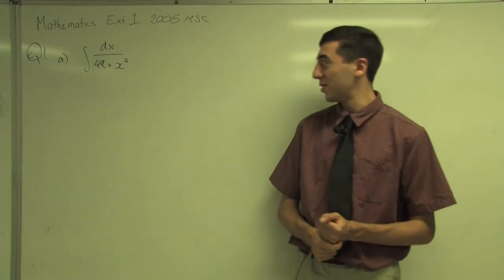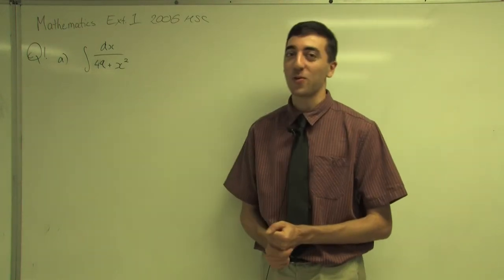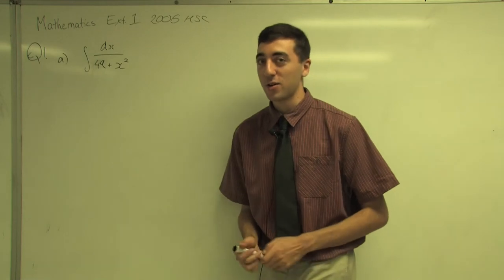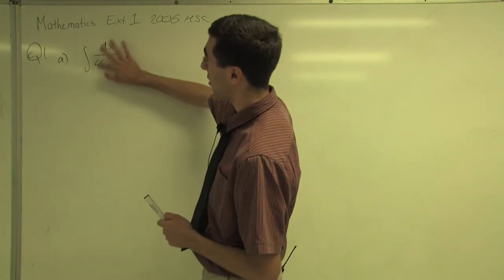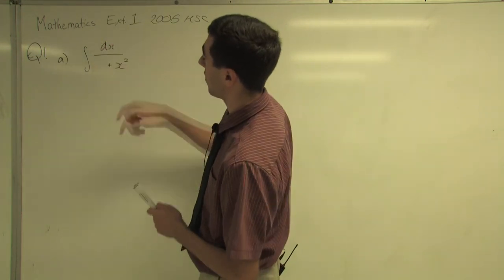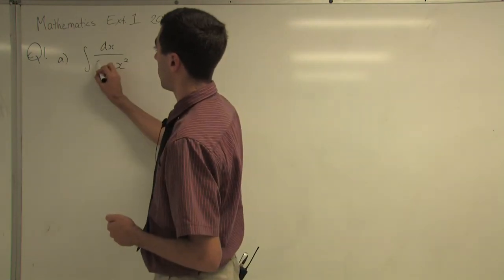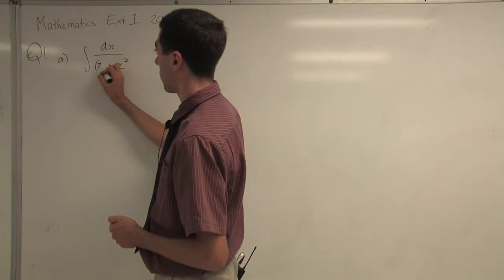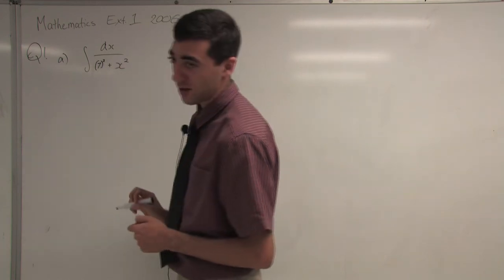The first question of the paper is find the integral of dx over 49 plus x squared. As we all know, this is an inverse tan function, the derivative of tan inverse, and we know that 49 is 7 squared.